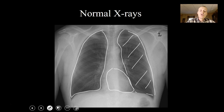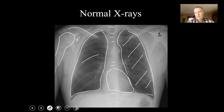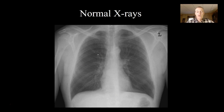You can see the clavicle, scapula, and humerus. These are cervical vertebrae, and thoracic vertebrae would be down in here. I can see ribs — that's about what I can see in this particular x-ray.